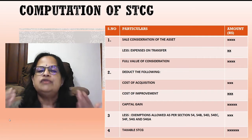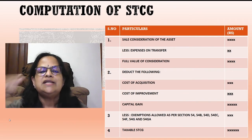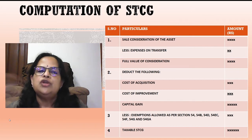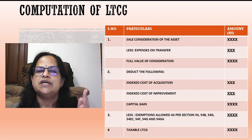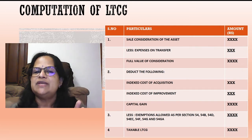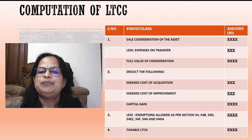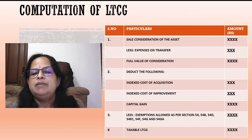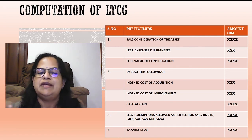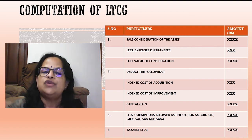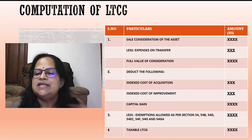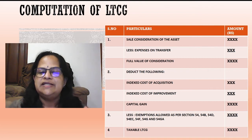After computing capital gain, you reduce exemptions as per Section 54, 54B, 54D, 54EC, 54F, 54G, and 54GA to get the taxable short-term capital gain. For long-term capital gain, the same format applies — the only difference is you use index cost of acquisition and index cost of improvement. Deducting those exemptions from capital gain gives you the taxable LTCG.